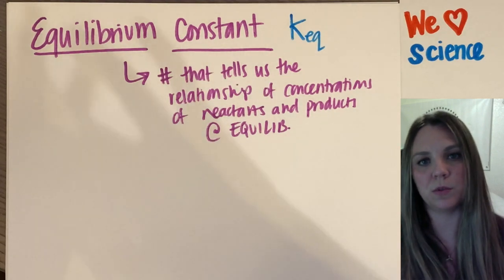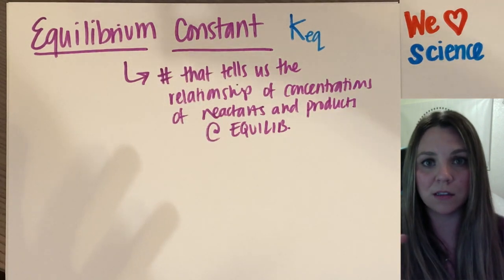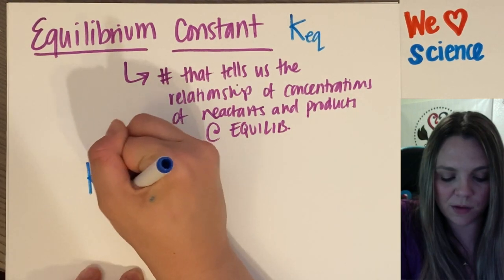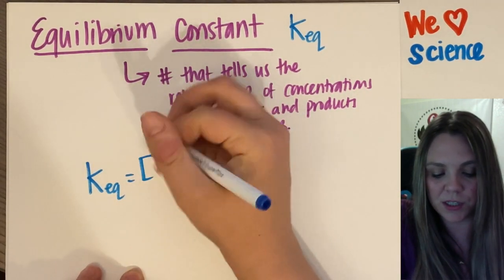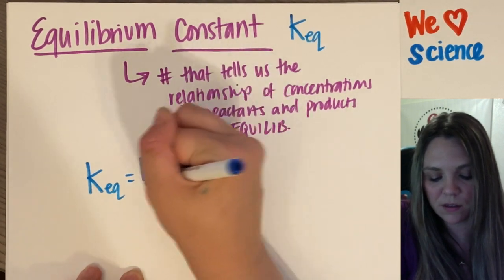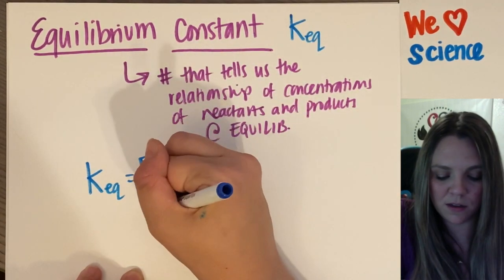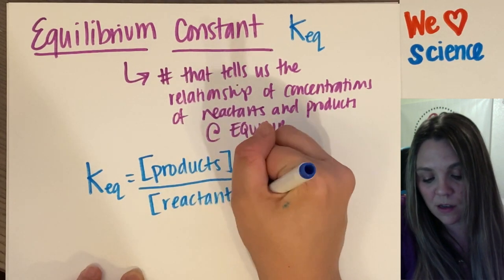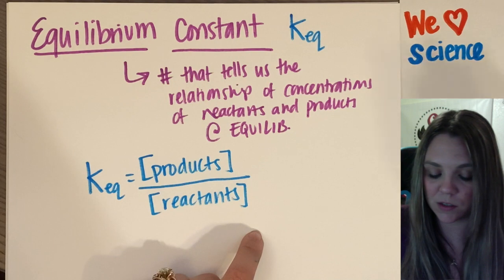It's a number that tells us the relationship between my reactant concentrations and my product concentrations. The K of equilibrium is going to have the concentration of your products divided by the concentration of your reactants. Products wins. Products are always on top.